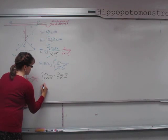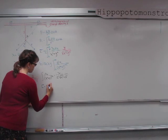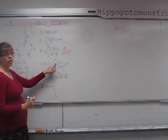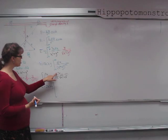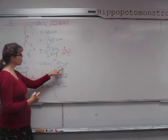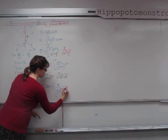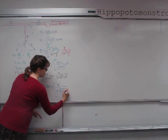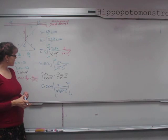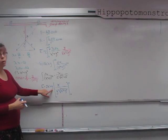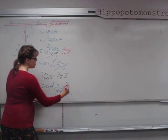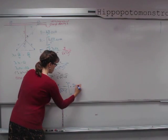So the electric field equals 2·k·lambda·y times x over (y²·sqrt(x² + y²)), evaluated from zero to infinity. We have y² on the bottom and y up top, so one y cancels, leaving just y in the denominator. This gives us 2·k·lambda divided by y.